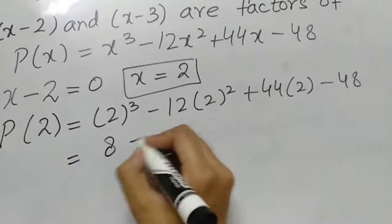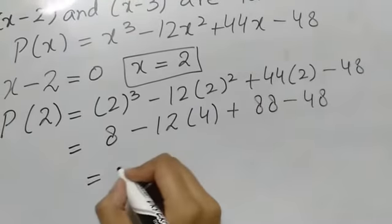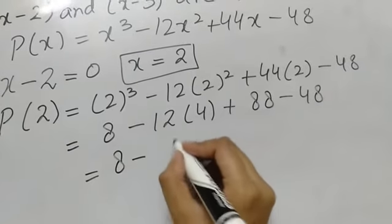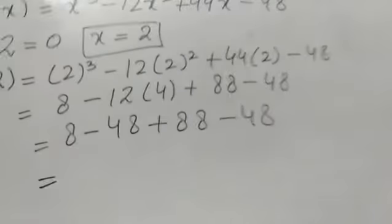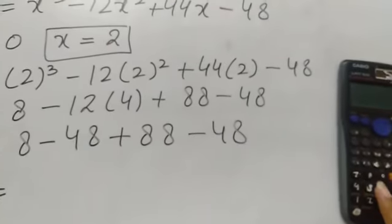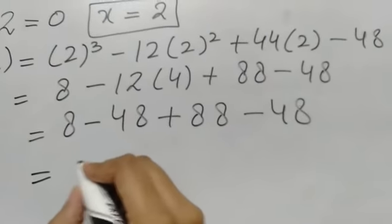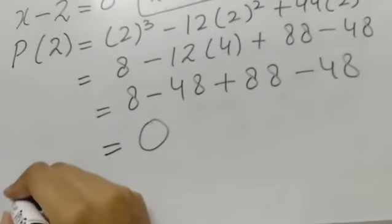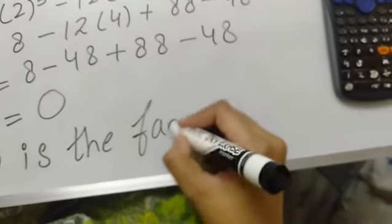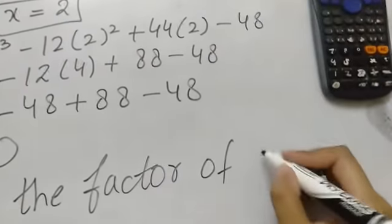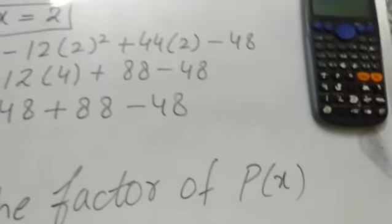2 cubed is 8, minus 12 times 4 is minus 48, plus 88 minus 48. So we have 8 minus 48 plus 88 minus 48. After solving all these terms, we get 0. So we know that x minus 2 is a factor of p of x.